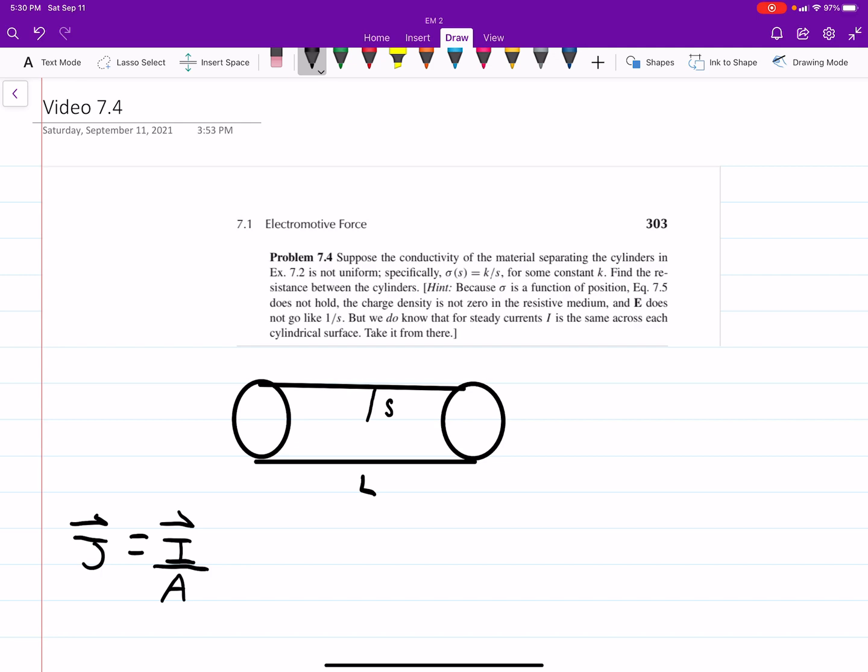The only difference is sigma is a function of the radius, it being k over s, where k is some constant, and it wants us to find the resistance.